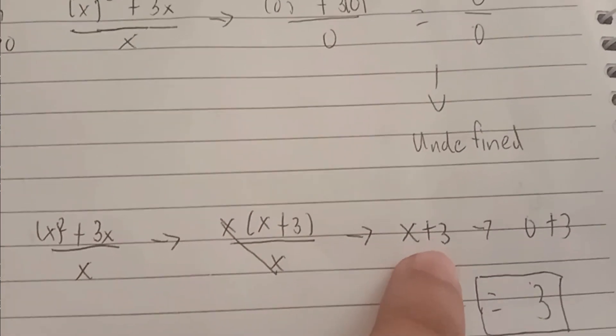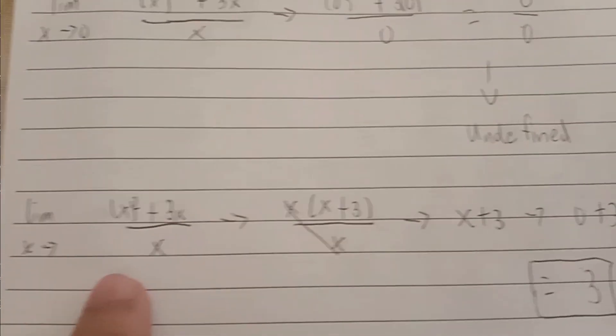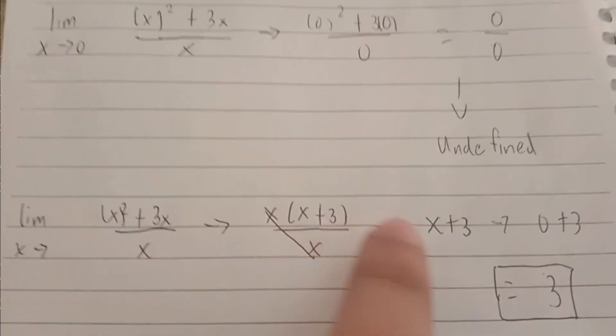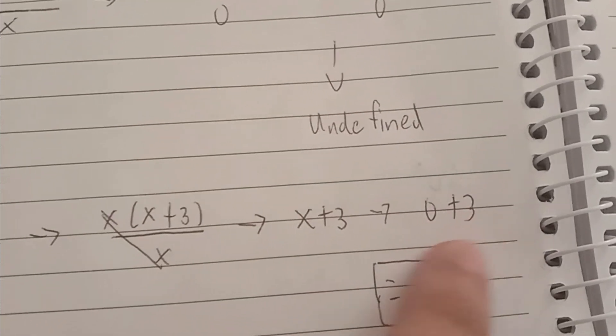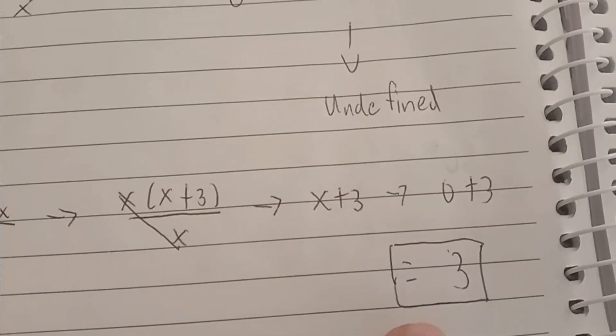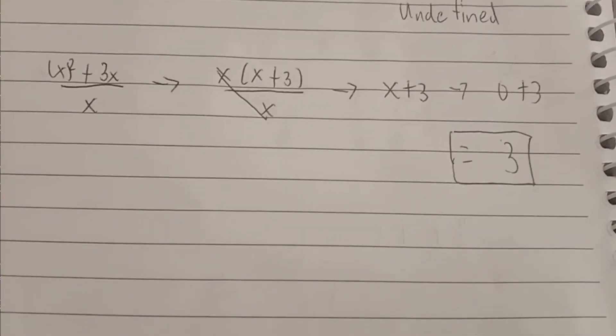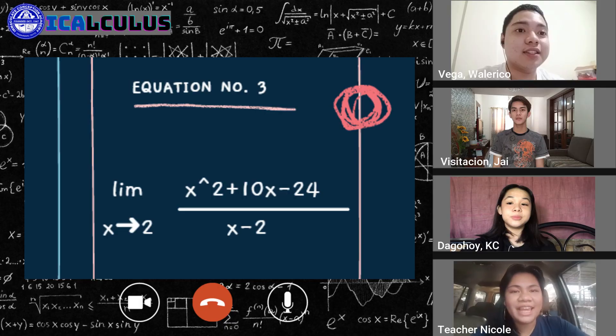So now we have x plus 3. Now what we have to do is to substitute the value. We will get 0 plus 3, which equals 3. And that is the answer of this equation. Okay, thank you very much.